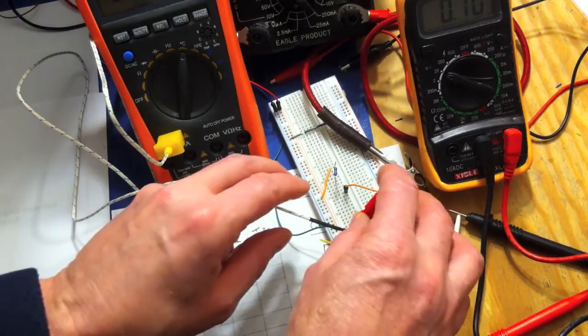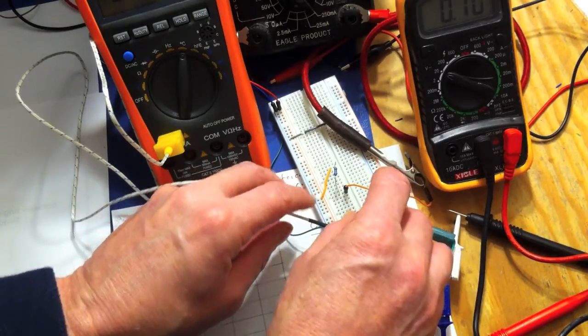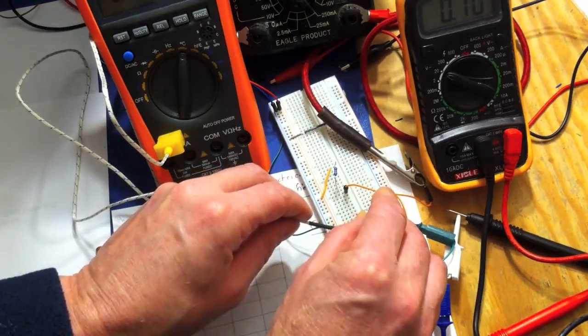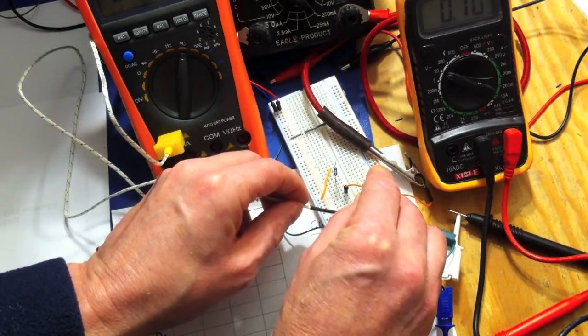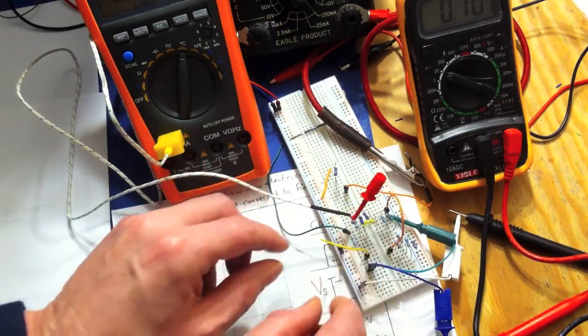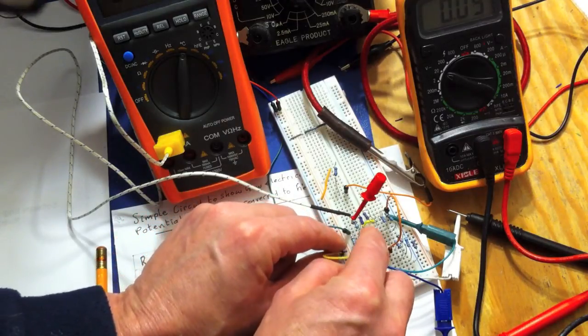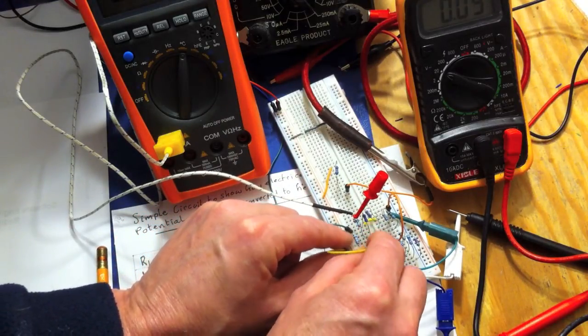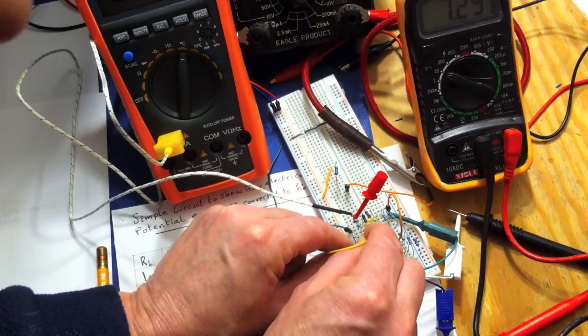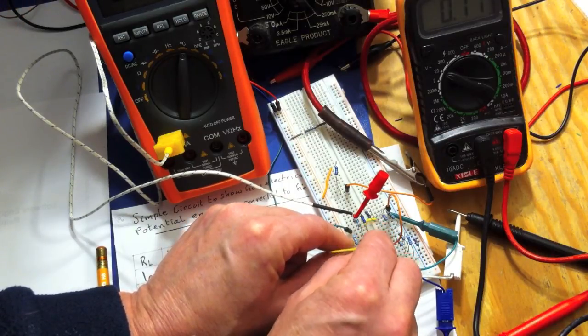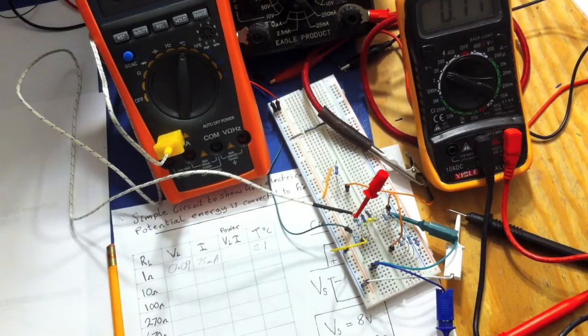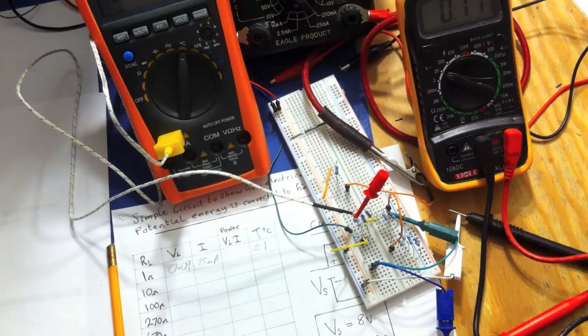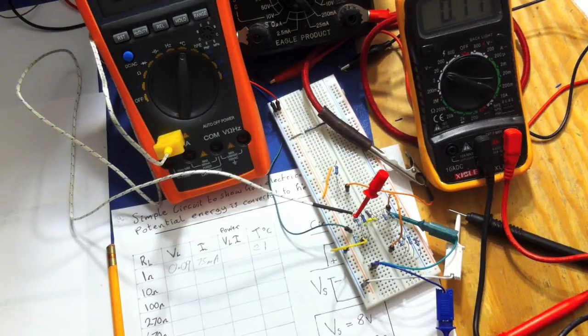So on to the next one, which is the 10 ohms. Take that off. Now I'm going to connect the temperature probe to the 10 ohm. And then I'm going to connect up my connection wire. So now I'm going across the 10 ohm. So we should see that the voltage will change. And yeah, we've got a voltage change now.